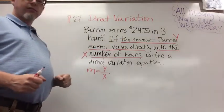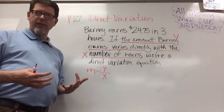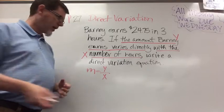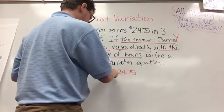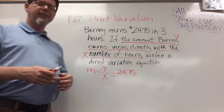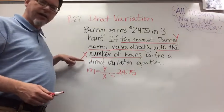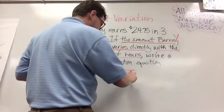Y is the amount Barney earns. Well, in the problem, how much is that? Exactly. $24.75. And how many hours is our x? That would be 3 hours. Because remember, slope is always rise over run or y over x.